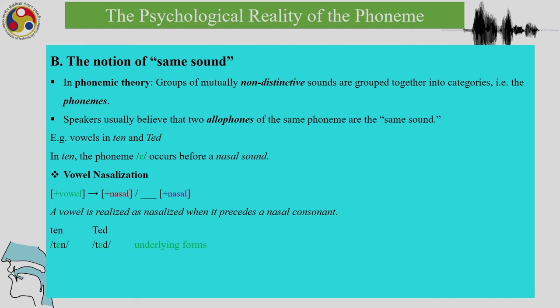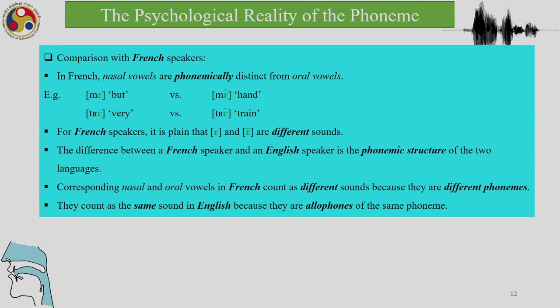Speakers usually believe that two allophones of the same phoneme are the same sound. In English, in the word 'ten,' the vowel occurs before a nasal sound, and vowel nasalization is a rule in English. For English speakers, the oral and nasal vowels are the same vowel; however, this may not be so in French.